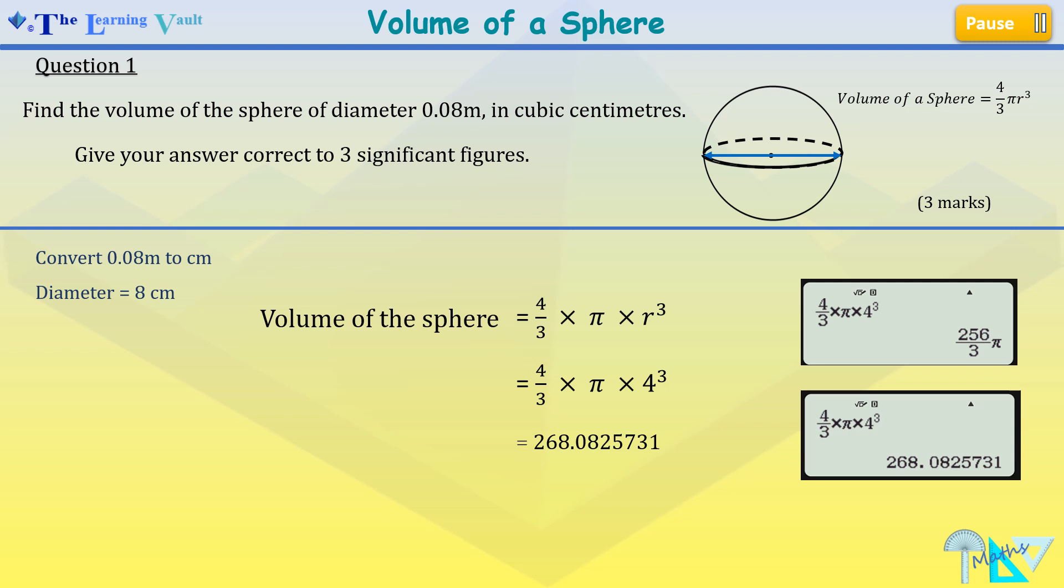Remember it says give your answer correct to three significant figures. So our final answer is 268 centimeters cubed. And with this you'll gain your full three marks.